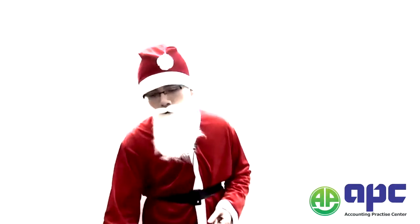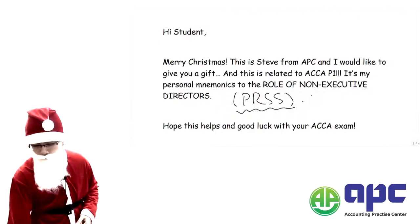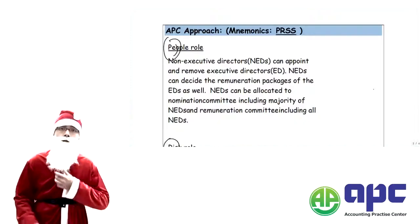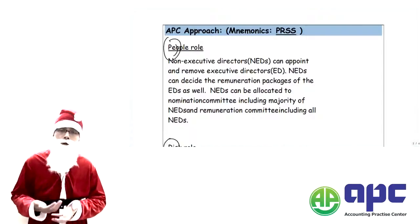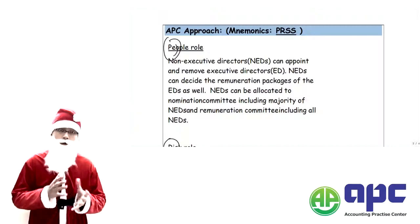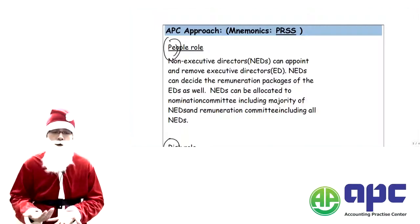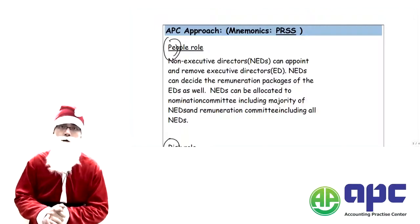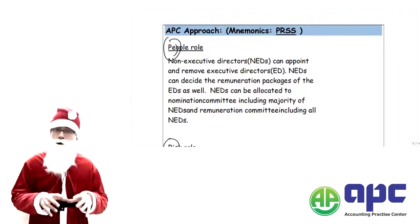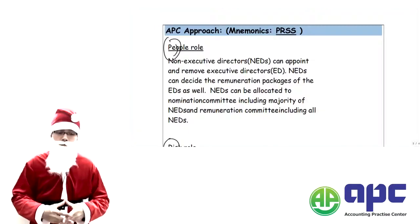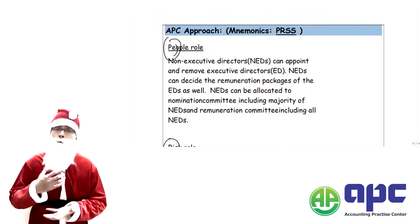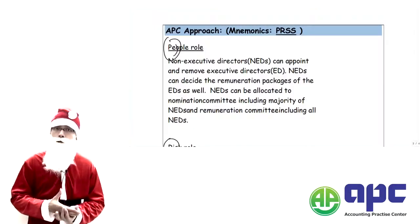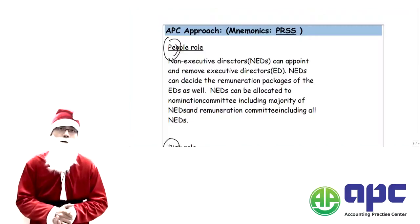So the roles of the non-executive directors: the first P stands for People. In deciding who would be the directors on the board, it is not the CEO who decides — for example, whether Mary or John will be a director. Rather, it's up to the non-executive directors, forming the nomination committee, to decide who will and will not be directors.